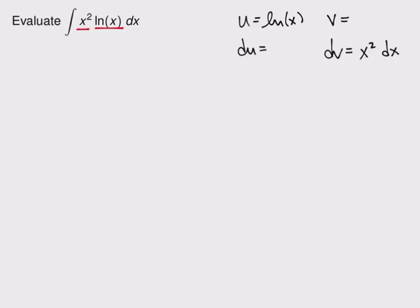Now dv being x squared does cause a little bit of a problem because it makes v which is one third x cubed more complicated than what I started with. But that's the price we pay for having to be able to calculate du which is just one over x dx and that's not too bad.